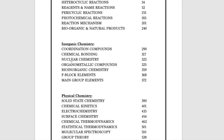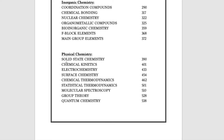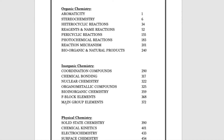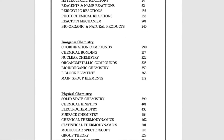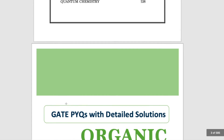Coming to the inorganic chemistry portion, we have coordination chemistry, chemical bonding, nuclear chemistry, organometallic compounds, bioinorganic chemistry, f-block elements, and main group elements. For physical chemistry, we have solid state, chemical kinetics, electrochemistry, surface chemistry, chemical thermodynamics, statistical thermodynamics, molecular spectroscopy, group theory, and quantum chemistry — all the topics with high weightage in the GATE exam.